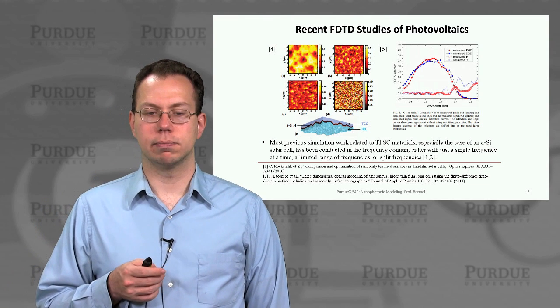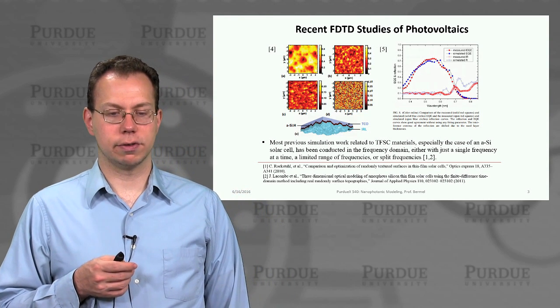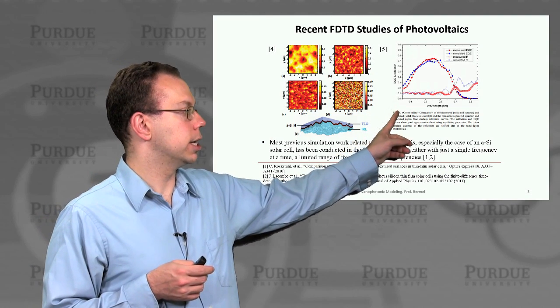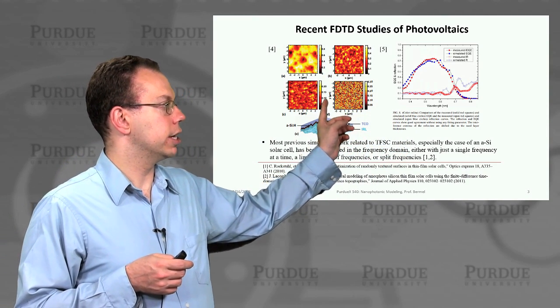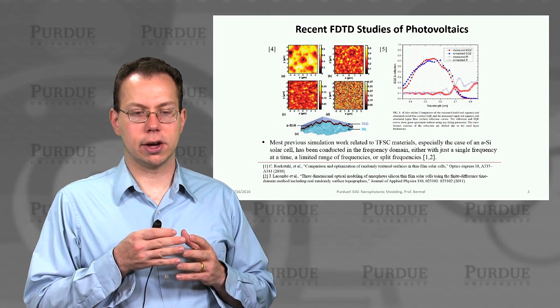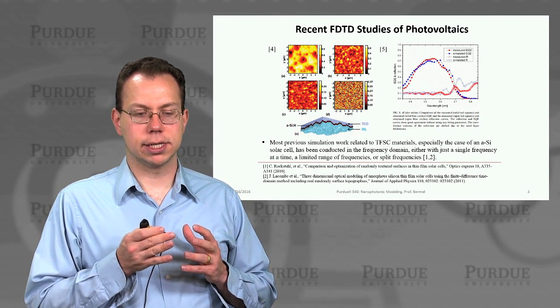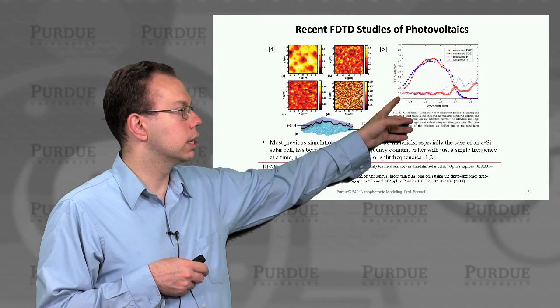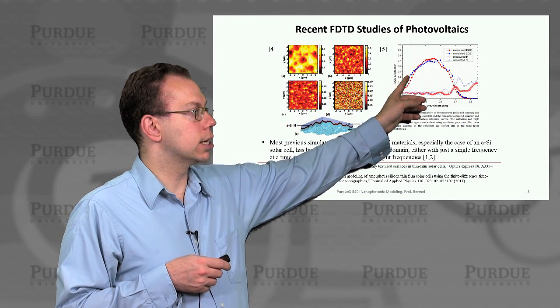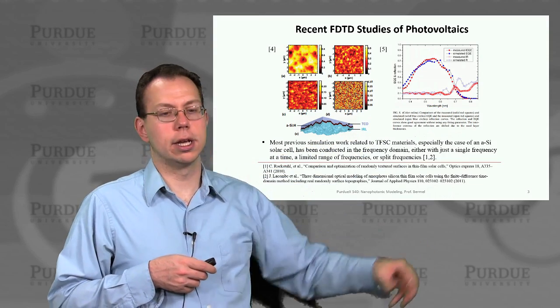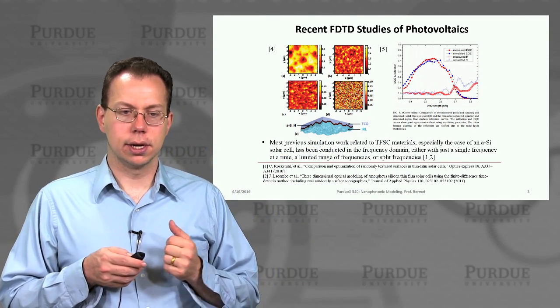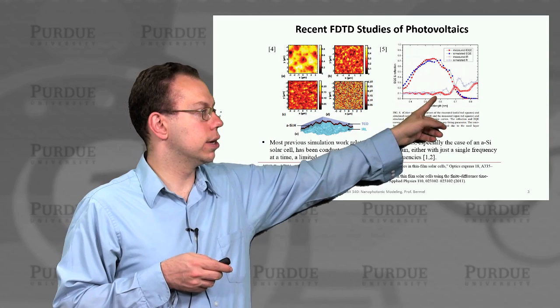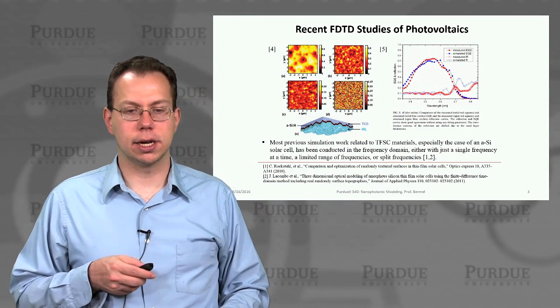Many groups have done work on this. Here are just a few examples showing work from Carson Rochstall et al. and also Lacombe et al., basically taking very complex texture structures and then trying to calculate the light trapping based on realistic geometries that are being built in experiments. And then showing what is the relative external quantum efficiency, and then validating that model to show that there's pretty good match between the predictions and the experimental results. The reflection also has a very good match.